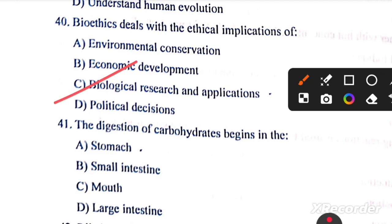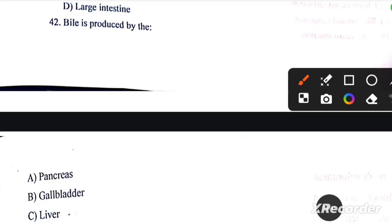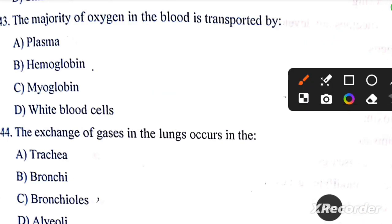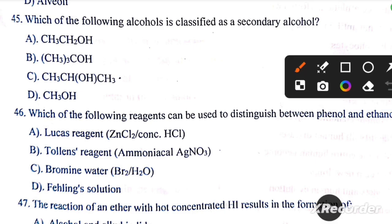The digestion of carbohydrates begins in the mouth. Bile juice is produced by liver. Question number 43: the majority of oxygen in the blood is transported by hemoglobin. The exchange of gases in the lungs occurs in the alveoli. Which of the following is classified as a secondary alcohol?